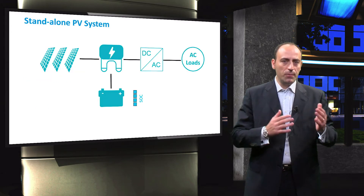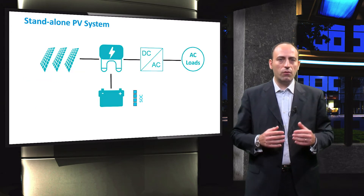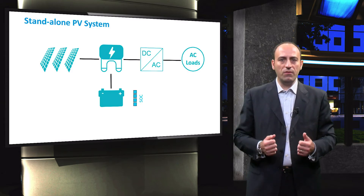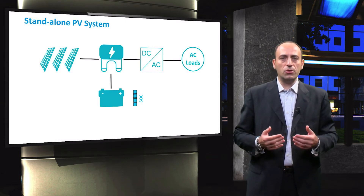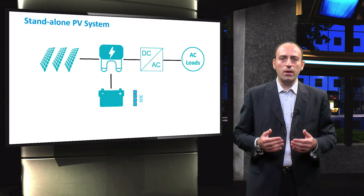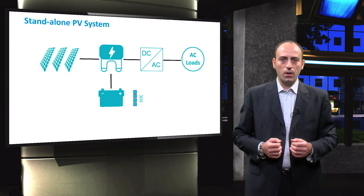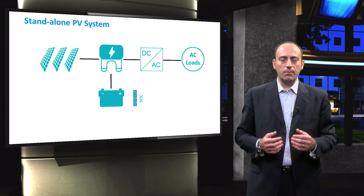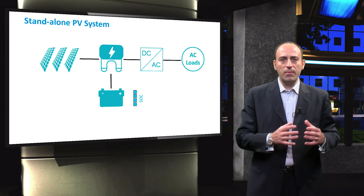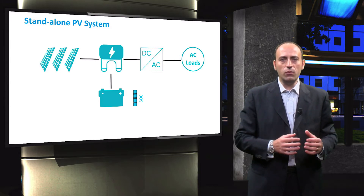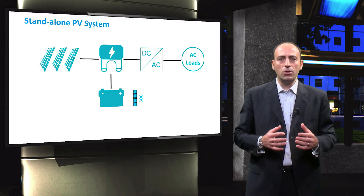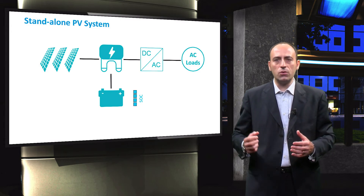This is a typical topology of a standalone PV system. It consists of the PV modules, the battery bank, the charge controller, the inverter, and the loads. The energy flow through such a system is as follows. Assume for example that the battery bank has a full state of charge and at a certain moment the load begins to consume power.